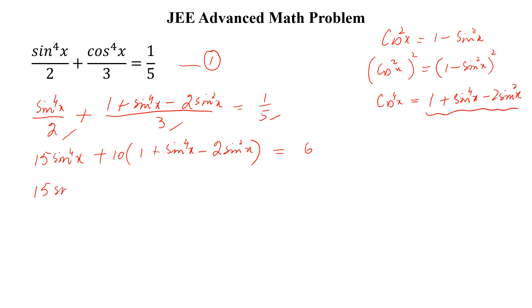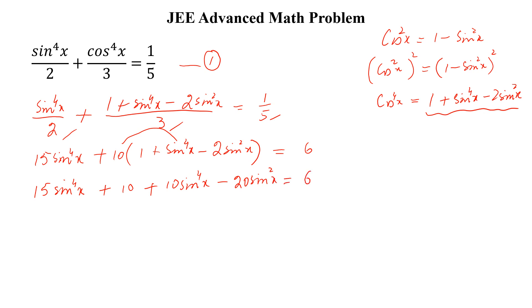Expanding, we get 15 sine to the power 4x plus 10 plus 10 sine to the power 4x minus 20 sine square x is equal to 6.